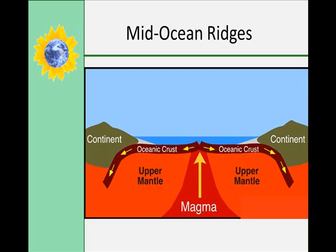The mid-ocean ridges are found near the center of most ocean basins and are associated with the divergent plate boundaries. These are the single largest topographic features on Earth. They can exceed 70,000 kilometers in length and can be between 1,000 and 4,000 meters wide.